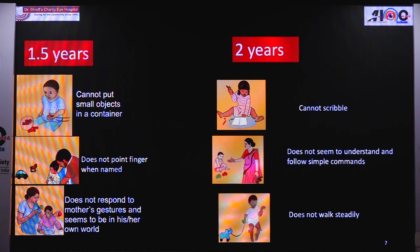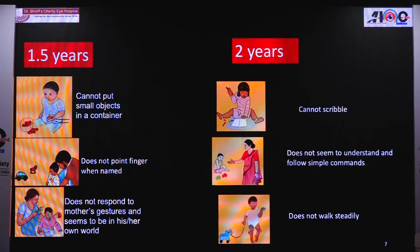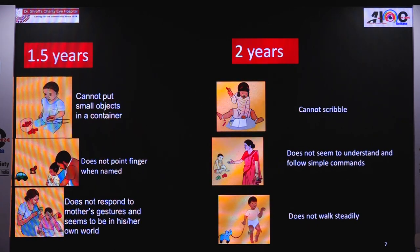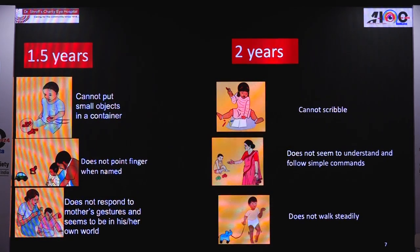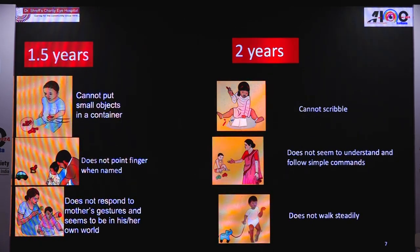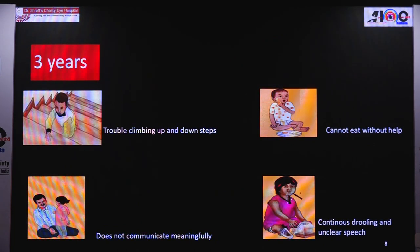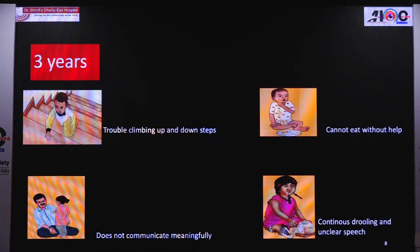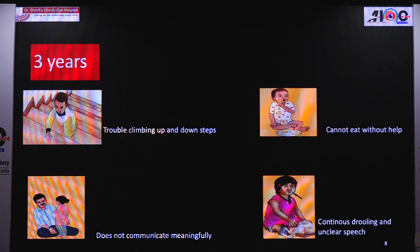By one and a half years, if the child cannot put small objects in a container, does not point finger when named, or does not respond to the mother's gestures, these children need thorough evaluation and the parents need to be educated. By two years if they cannot scribble, do not walk steadily, or do not understand simple commands; and by three years if they have trouble climbing up or down steps, do not communicate meaningfully, have continuous drooling, or cannot eat without help.